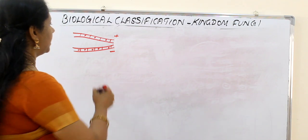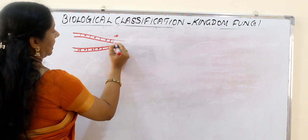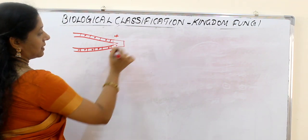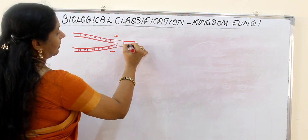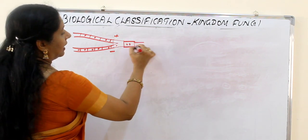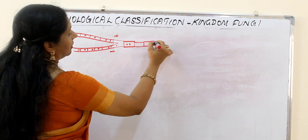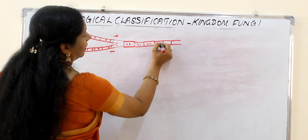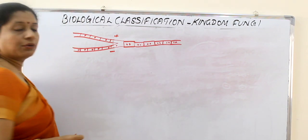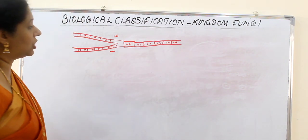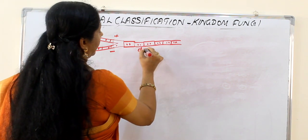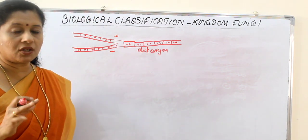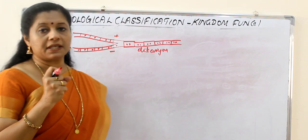During sexual reproduction, one plus hyphae and one minus hyphae come together and fuse. As a result, the cell will have two nuclei. It will then undergo division to form hyphae each having two nuclei. This is the dikaryon stage, and the dikaryon mycelium also exists for a period — they do not fuse immediately.